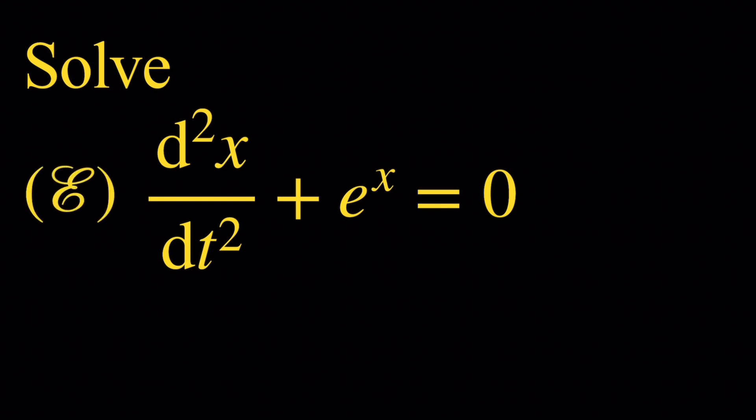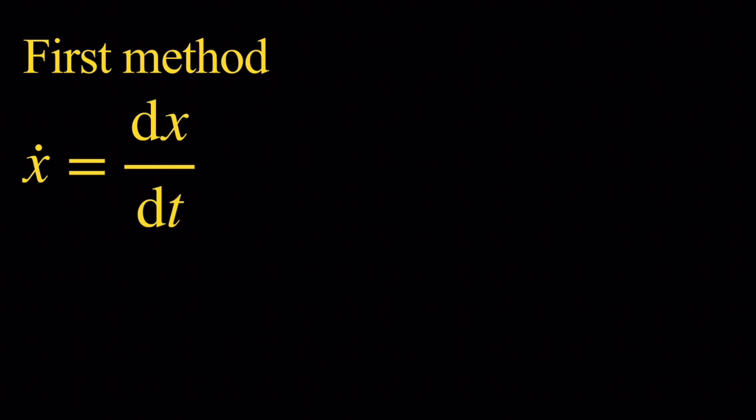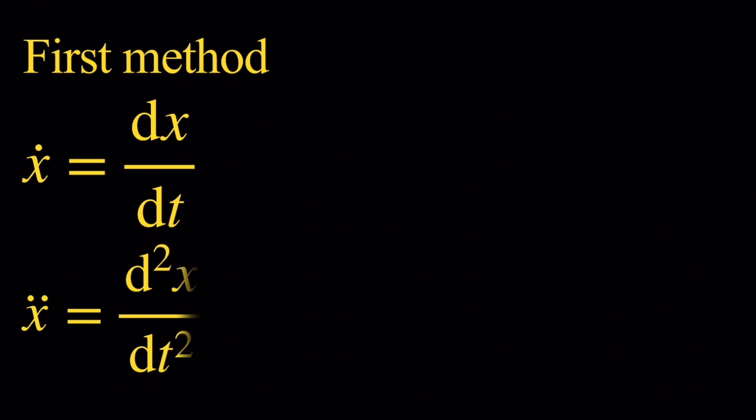Let's denote it by e. Now we're going to start with some notations. We're going to denote by x-dot the first derivative of x with respect to t, and by x-double-dot its second derivative.